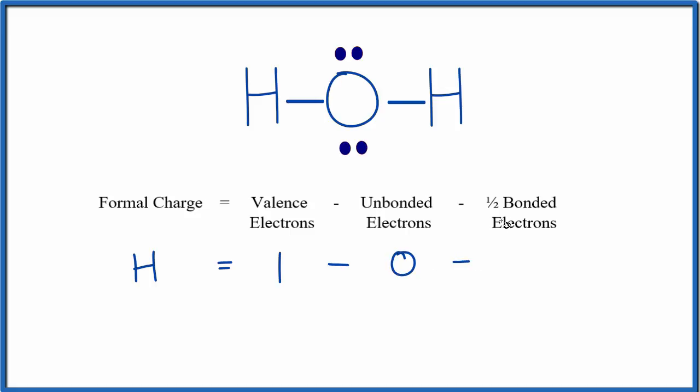And then one-half of the bonded electrons. So this line here represents two bonded electrons. So 2, and we're going to divide that by 2 to get half.